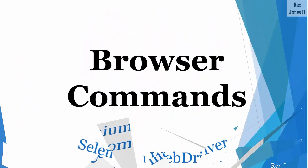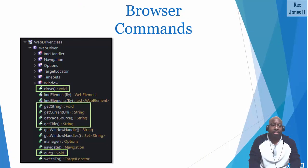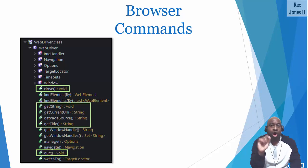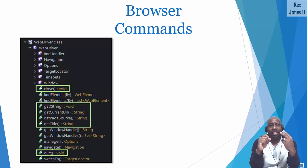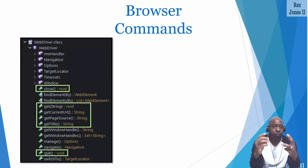The browser commands are a group of commands that perform actions on a browser. There is a total of six browser commands: close, get, get current URL, get page source, get title, and quit.